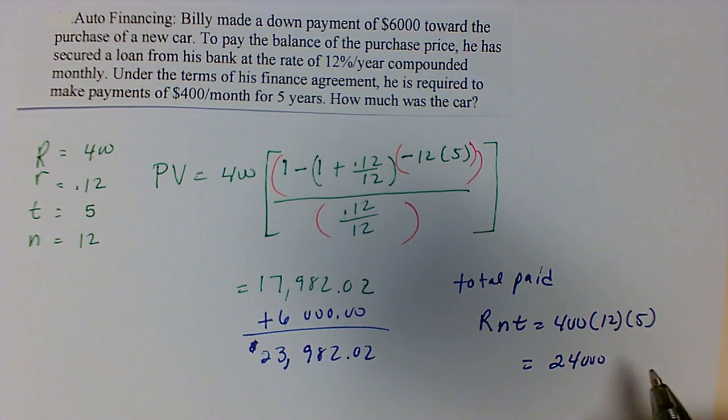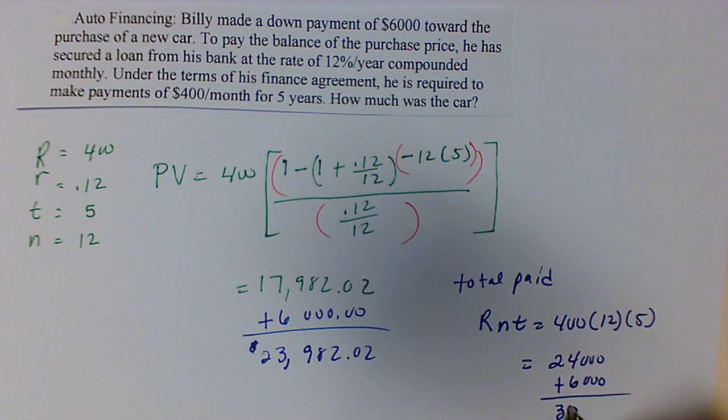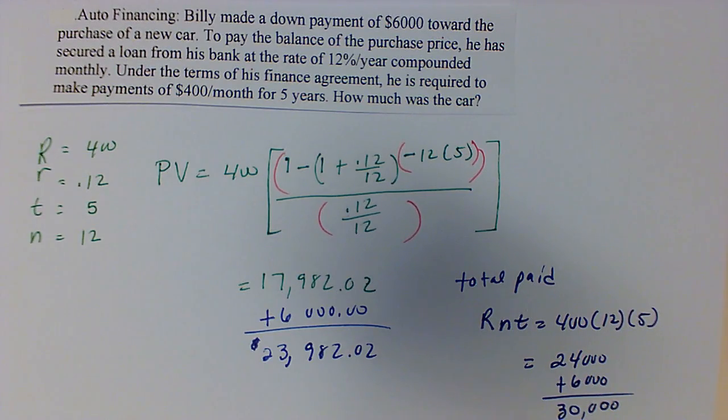And remember, you put a down payment on that. So you have to add this $6,000. And that will get you a total of $30,000 for the price of the car. So that would be the total that you paid, including interest.